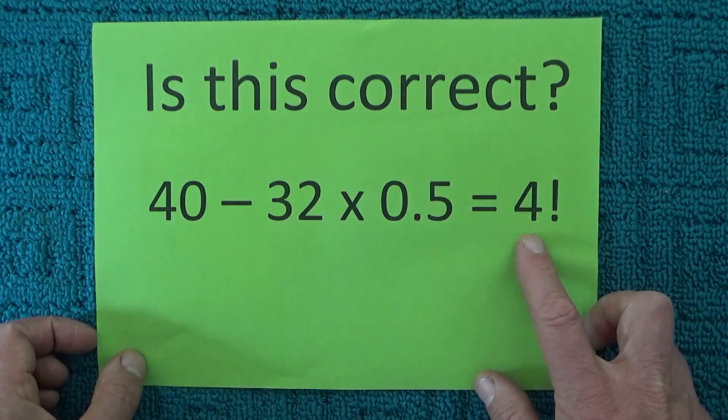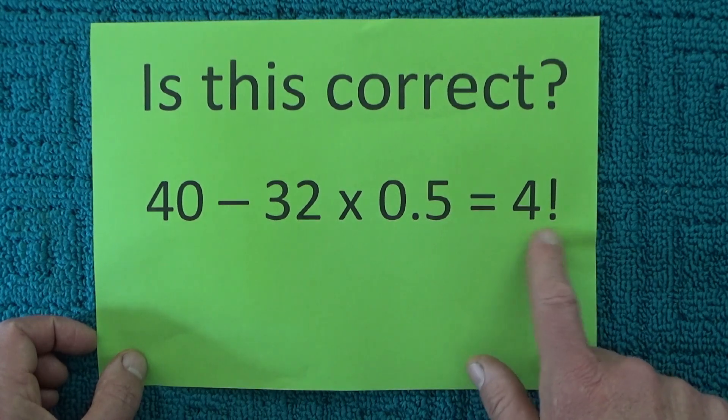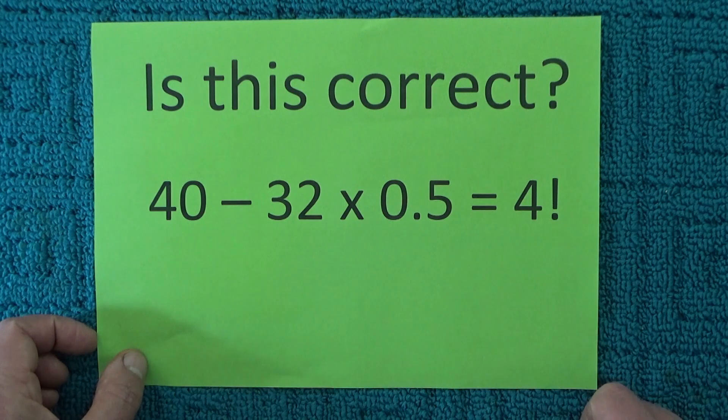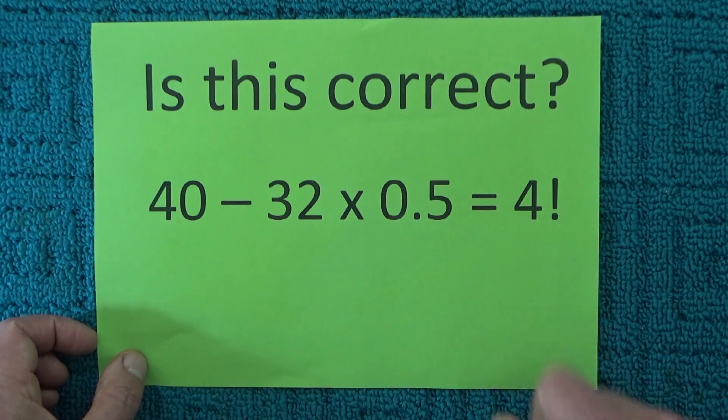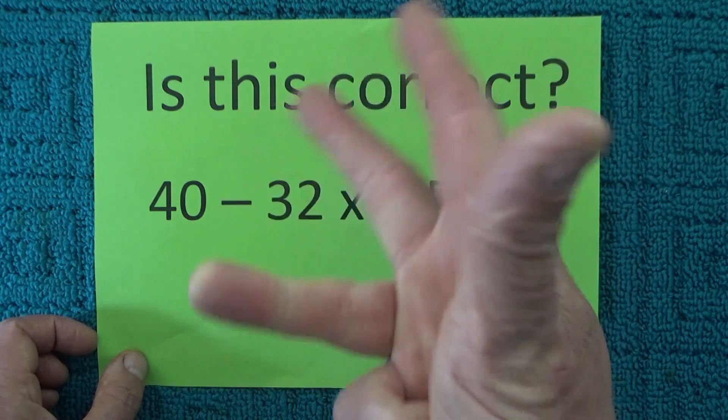It's actually not saying it's 4, it's saying it's 4 exponential, which is what that exclamation point means. That's 4 times 3 times 2 times 1.